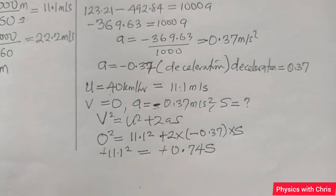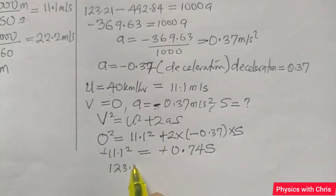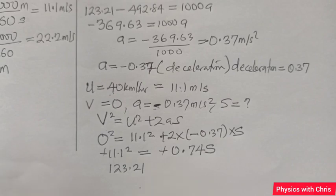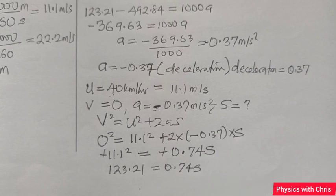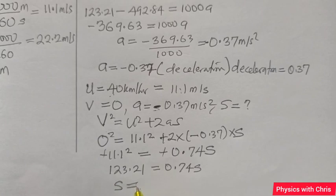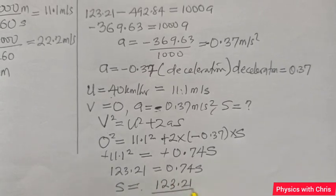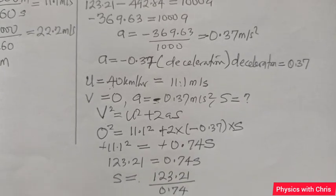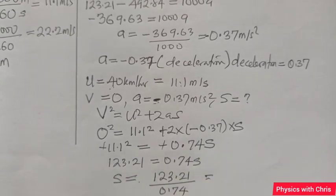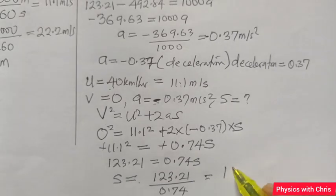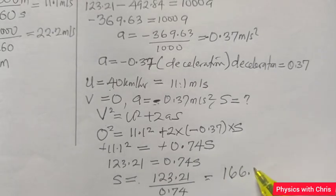This gives me 123.21, that is 11.1², equals 0.74s. Dividing both sides by 0.74, 123.21 divided by 0.74 gives roughly 166.5 meters.